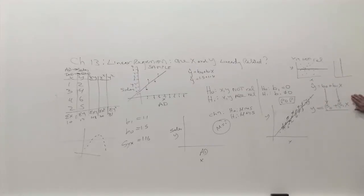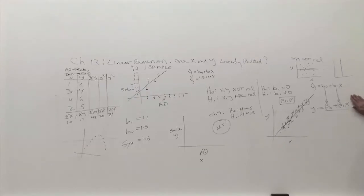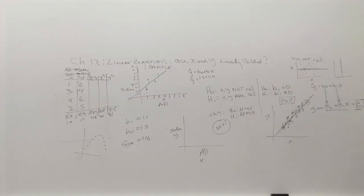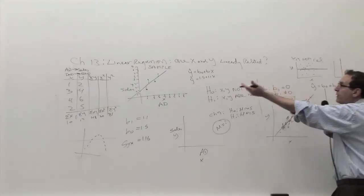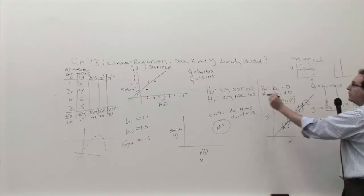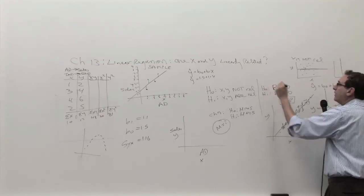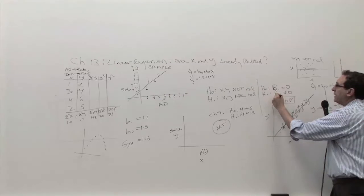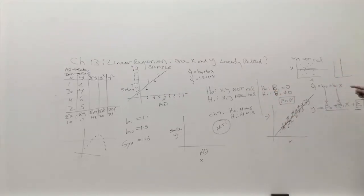Mathematics tries to simplify nature, but as Einstein said, you don't want to overly simplify it. The data follows more or less a straight line, and 'more or less' is what epsilon takes into account. Now, because we don't really care about B1's value itself — B1 happens to be 1.1, which is certainly not zero — the question is: in a larger population, what is beta1? Saying X and Y are not related is the same as saying beta1 equals zero for the entire population. So the proper hypotheses are: H0: beta1 equals zero (they're not related), versus H1: beta1 is not equal to zero. That's step one of the hypothesis testing four-step procedure.